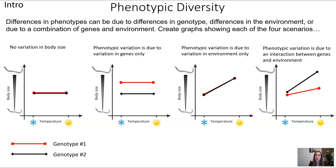There are lots of correct answers, but let's look at the core concept. If there's no variation in body size, you should have just one body size — that's why it's a straight line. With both genotypes represented by the red and black lines, they are identical, and they're also identical across different environments such as temperature. In the next scenario, where phenotypic variation is due to variation in genes only, we do see a difference between different nematodes, but temperature doesn't matter — the environment has no effect.